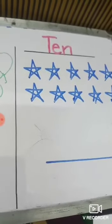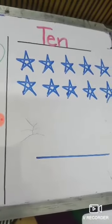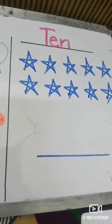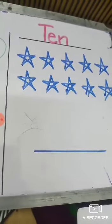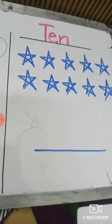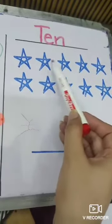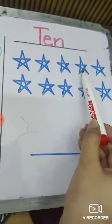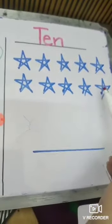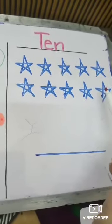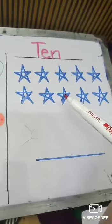Okay students, the next number is 10. What comes after 9? 10. The next number is 10. Now we will discuss about the number 10. Let's start the counting — how many stars on the board? 1, 2, 3, 4, 5, 6, 7, 8, 9, 10. How many stars on the board? There are 10 stars.